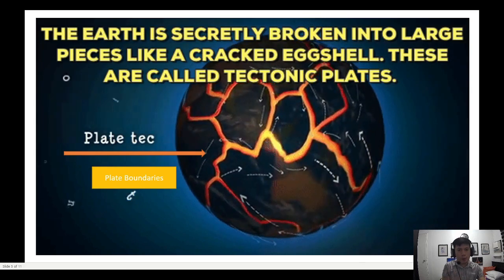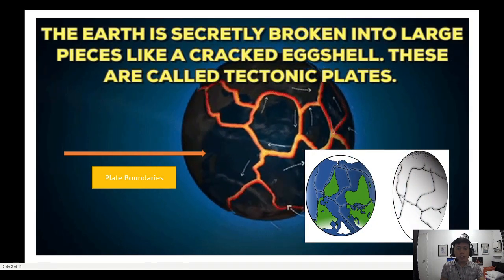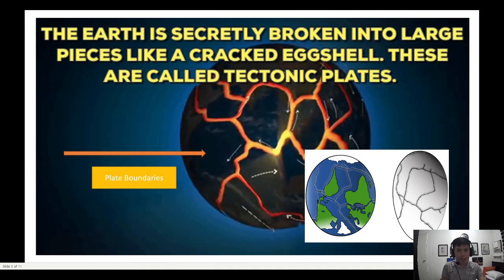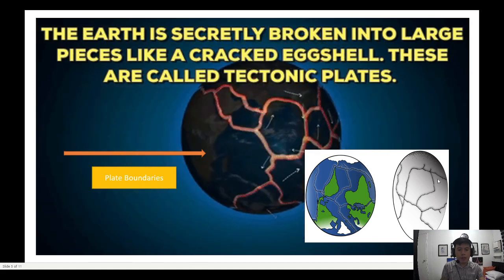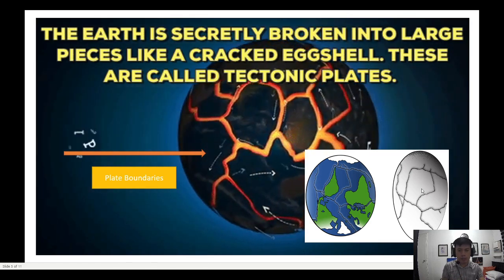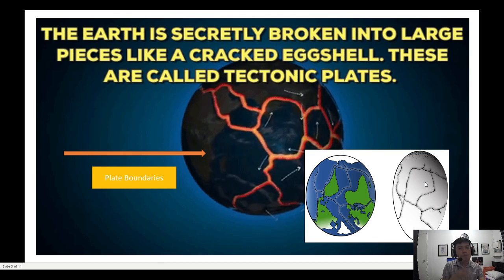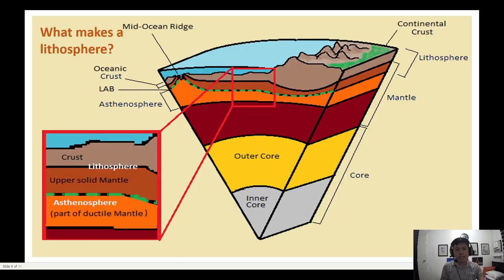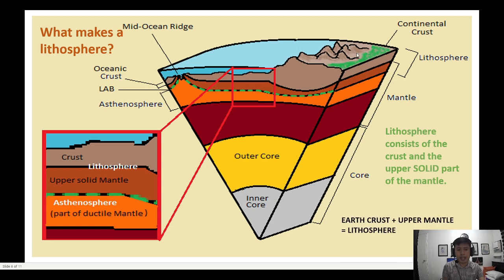The earth is analogous to a hard-boiled egg. The outer shell of the hard-boiled egg represents the lithosphere of the earth, while each broken section of the shell represents the tectonic plates. The lithosphere is composed of the continental crust and the solid part of the mantle — or the uppermost layer of the mantle. So, earth's crust plus the uppermost layer of the mantle makes what we call the lithosphere.